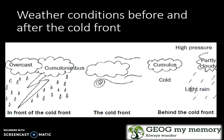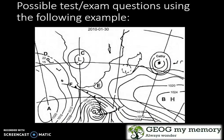Now let us look at possible test and exam questions. Using the following example: the date shown is the 5th of the 1st month, 2010 — this is summer in the southern hemisphere. We can see pressure cell A and pressure cell B, both are high pressure cells, and we can see low pressure cell C with tropical cyclone Kathy.